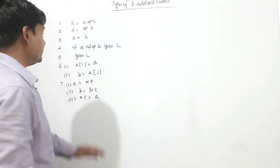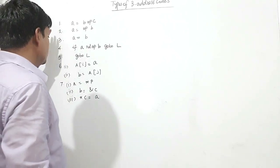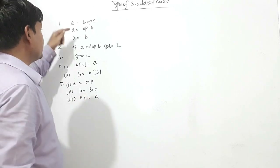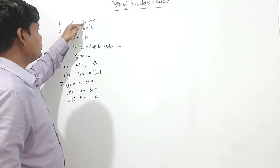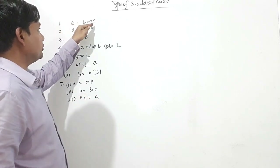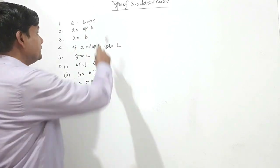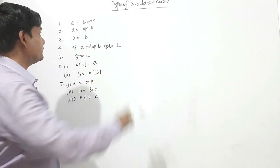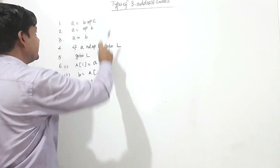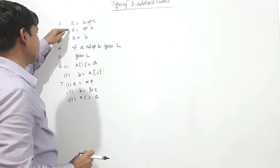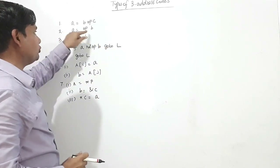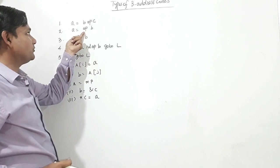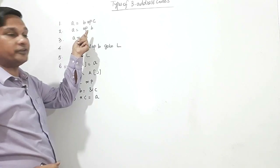Here we shall see types of three address code. A equal to B operator C — this operator is a binary operator. This is one type of three address code. A equal to operator B — this operator is a unary operator.